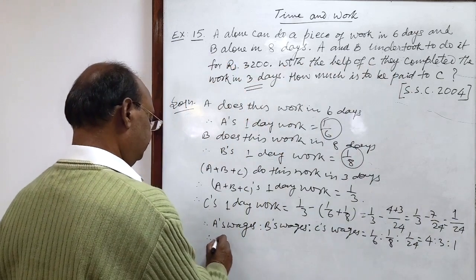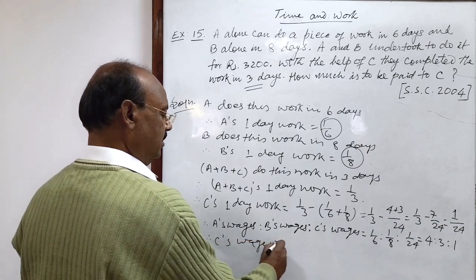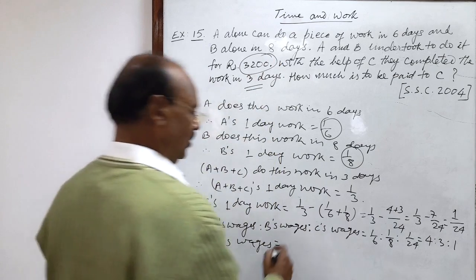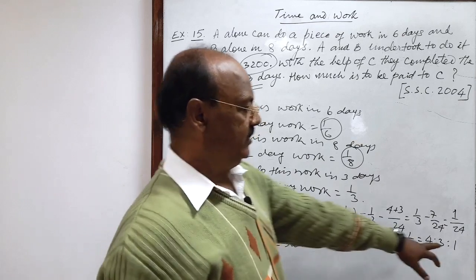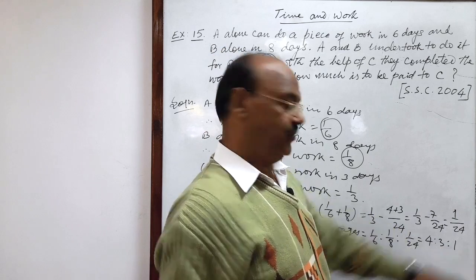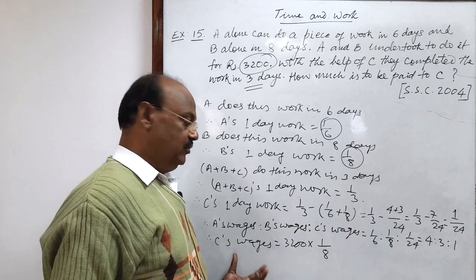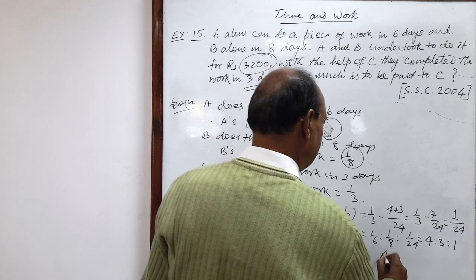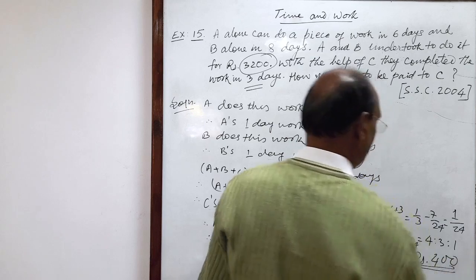So therefore C's wages will be, total amount received is 3200. Its ratio is 1 and sum is 4 plus 3 is 7 plus 1 is 8. By simplifying it we will get the amount which will be paid to C. So this is equal to 400. Answer is rupees 400. This is the answer.